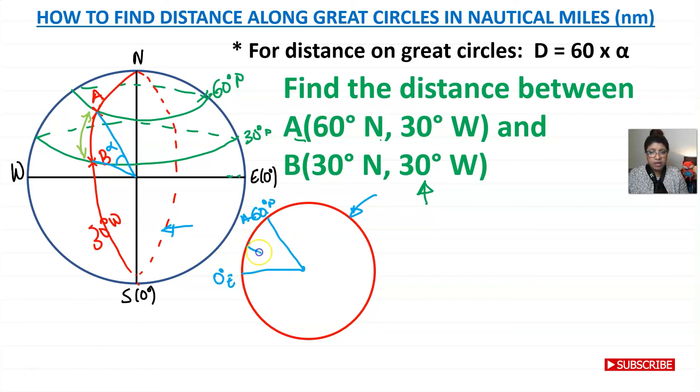So B is over here. And that is 30 degrees north. So this is 30 degrees. This one here is 60 degrees. What do we need? So we're dealing with this sector here. So this is the sector that we're dealing with. And that's the distance that we want from A to B.